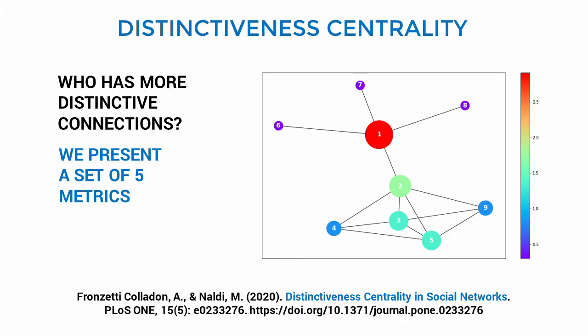Node 1 is reaching peripheral nodes and it's the only one who can reach them. By contrast, node 2 is reaching other nodes in the network that are quite well connected. This was to introduce the logic behind distinctiveness.